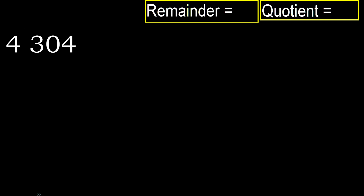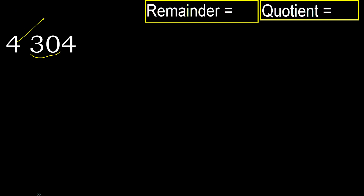300 divided by 4. 3 is less, therefore next. 30 is not less, therefore with 30, divide.